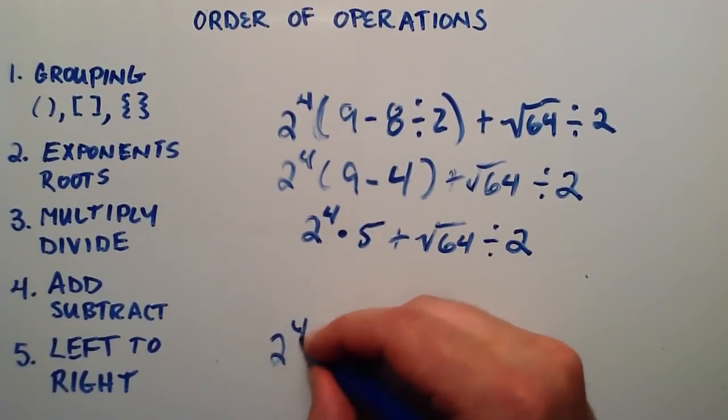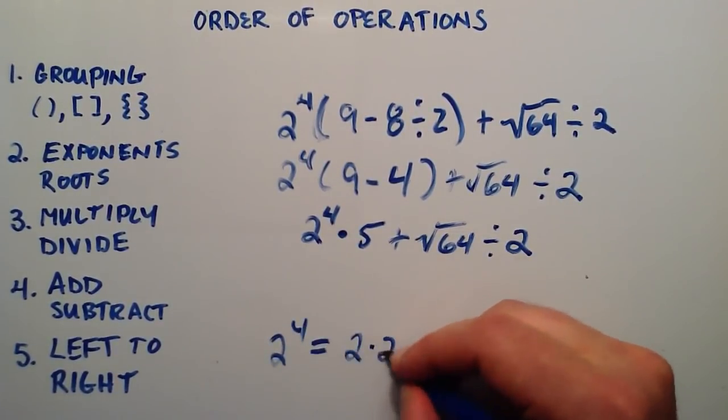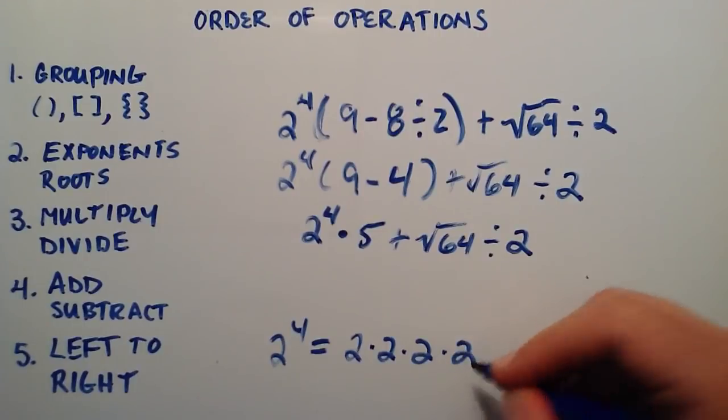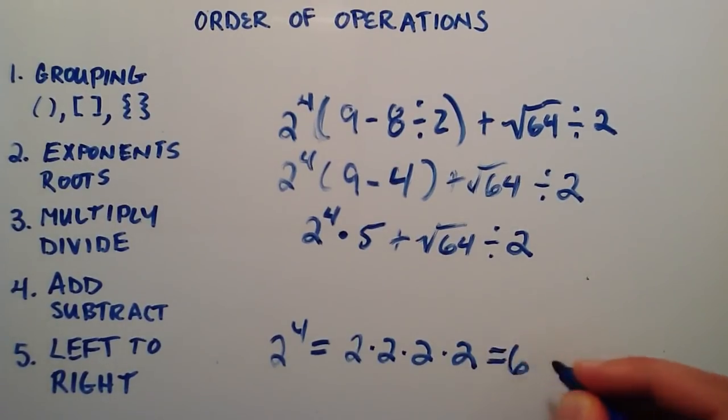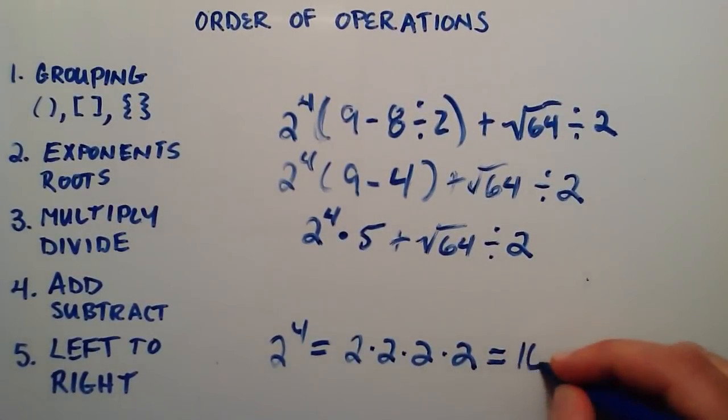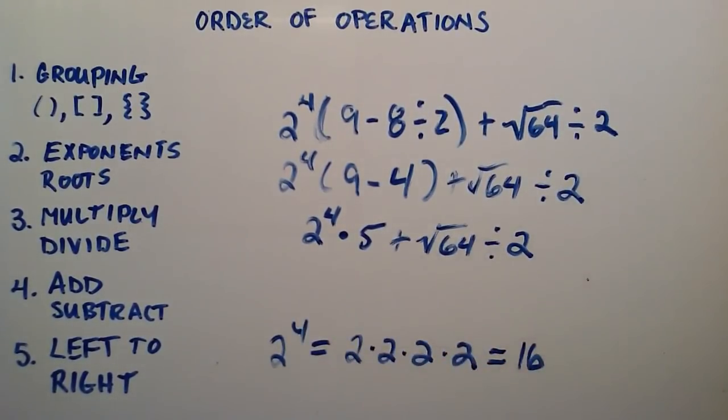And remember, 2 to the 4th is equal to 2 times 2 times 2 times 2. 2 multiplied by itself 4 times. There's 4 of them. So 2 times 2 is 4, 4 times 2 is 8, 8 times 2 is 16. So 2 to the 4th is equal to 16.